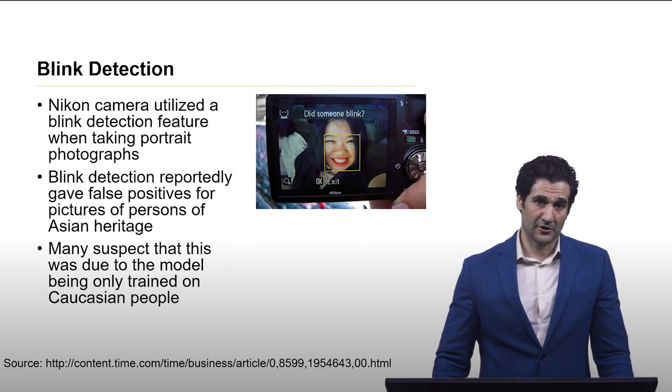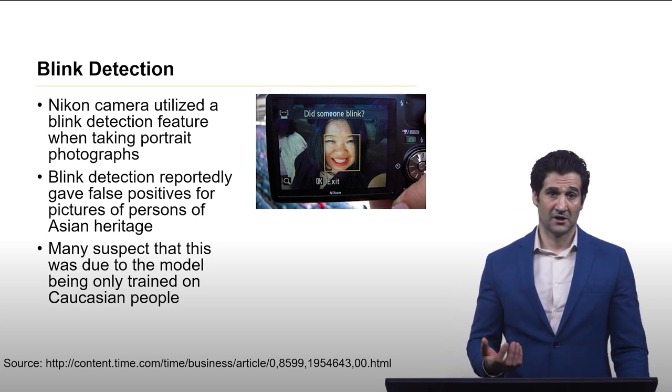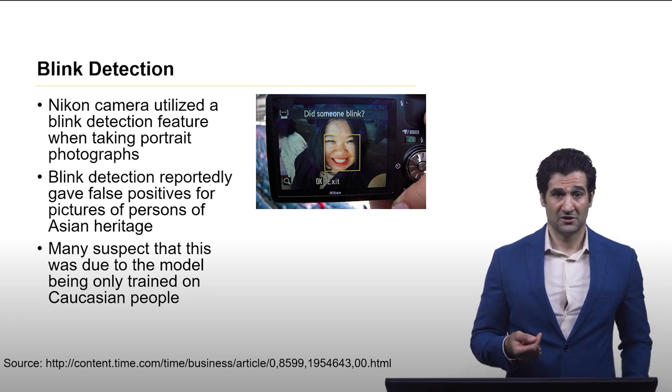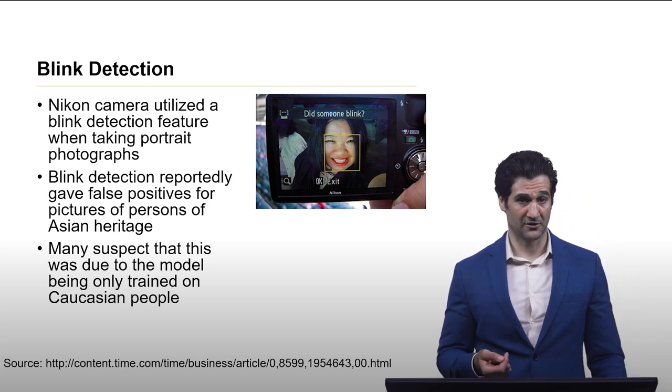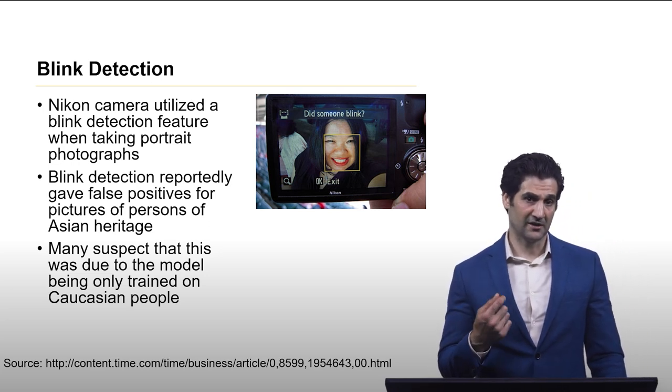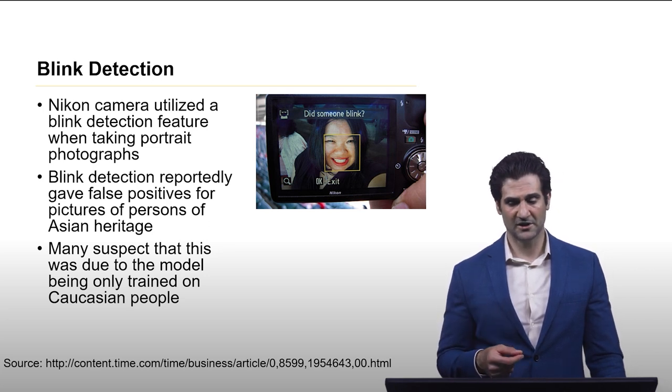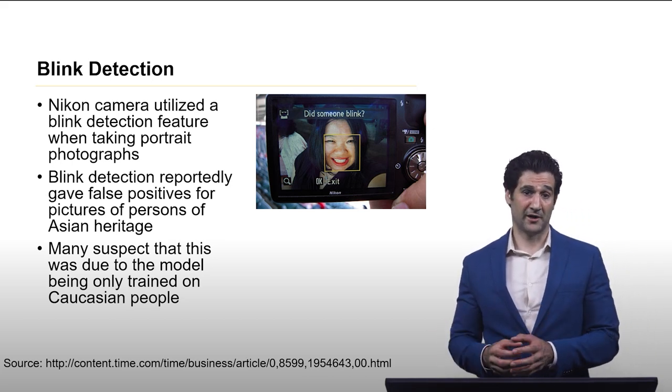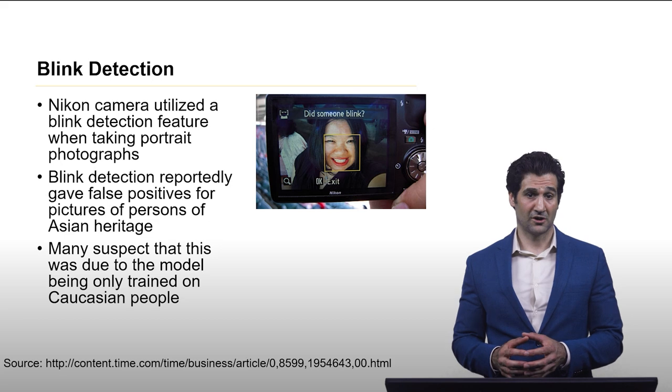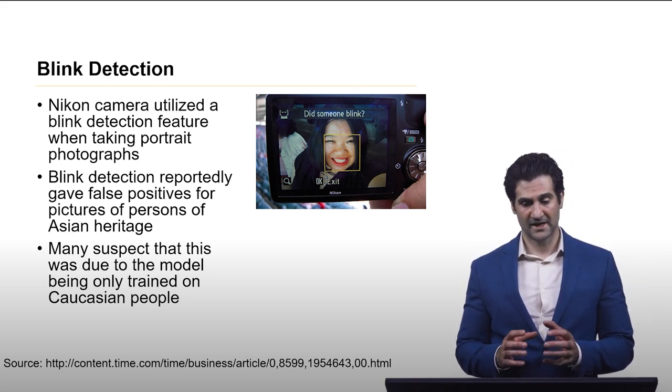Another example of unfair algorithms occurred in blink detection. Nikon cameras were using a model to determine if individuals were blinking as the photographs were being taken, and it reportedly gave false positives for pictures of persons of Asian heritage. Many suspect that this was due to the models being trained primarily on Caucasian individuals who have a different eye structure than Asians do.